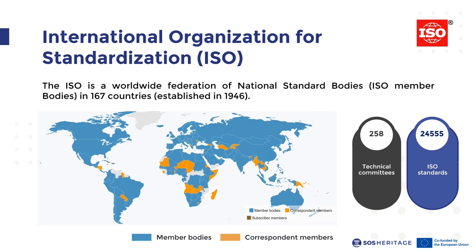The International Organization for Standardization was established in 1946 and nowadays involves more than 150 countries from all over the world. In 2022 it included more than 250 technical committees and had already published more than 24,000 standards. Here on the map you can see the member bodies and the correspondent members spread all over the world, covering most countries worldwide.